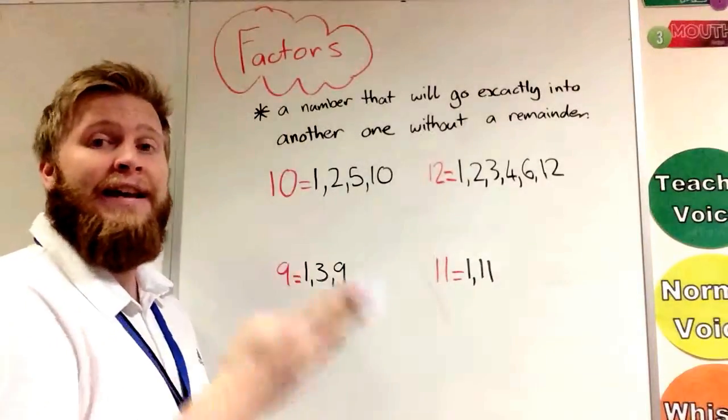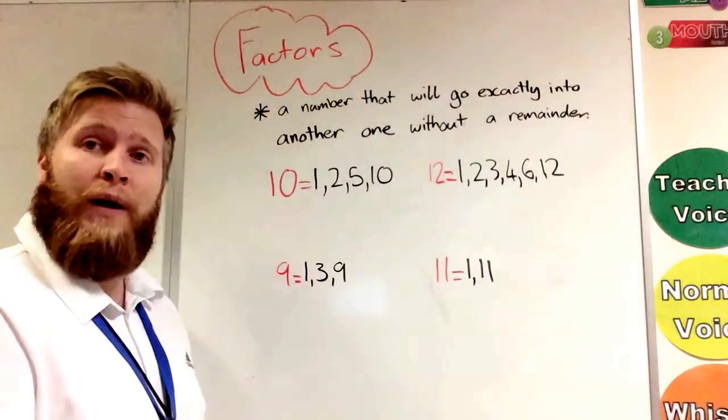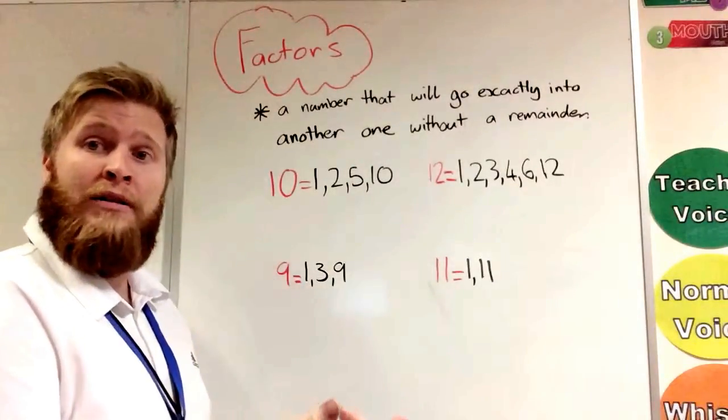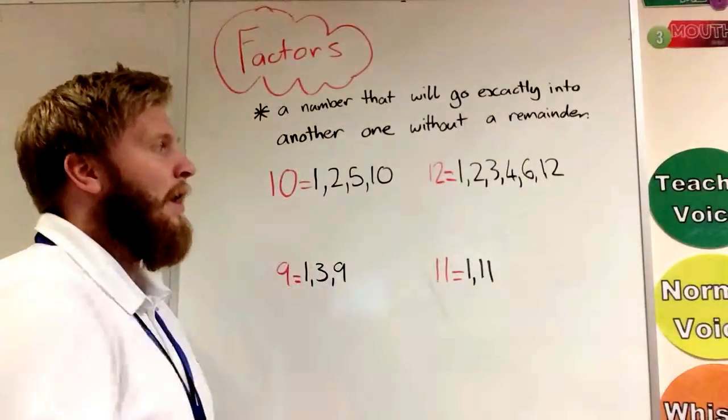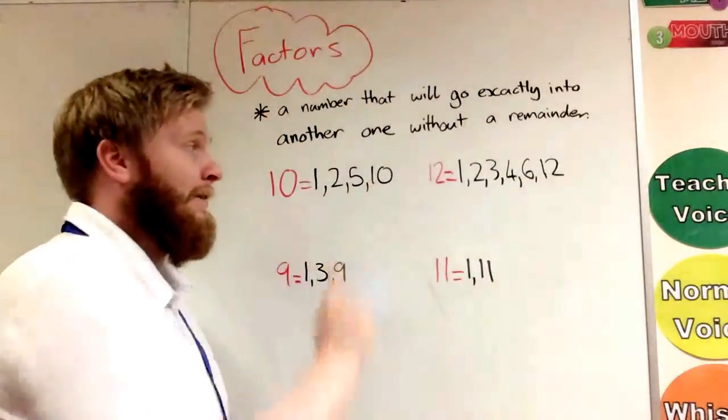We went to the 2 times table—2, 4, 6, 8, 10—we would get to 10 without any left over. 5 times table—5, 10. Count on that times table, don't have any left over.